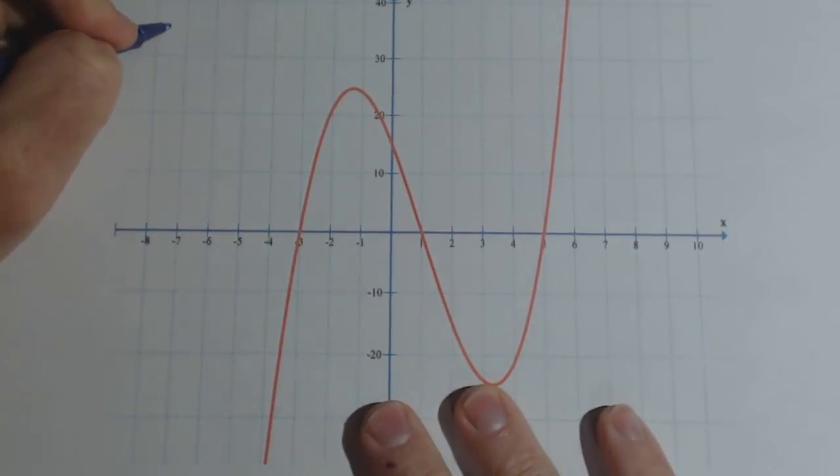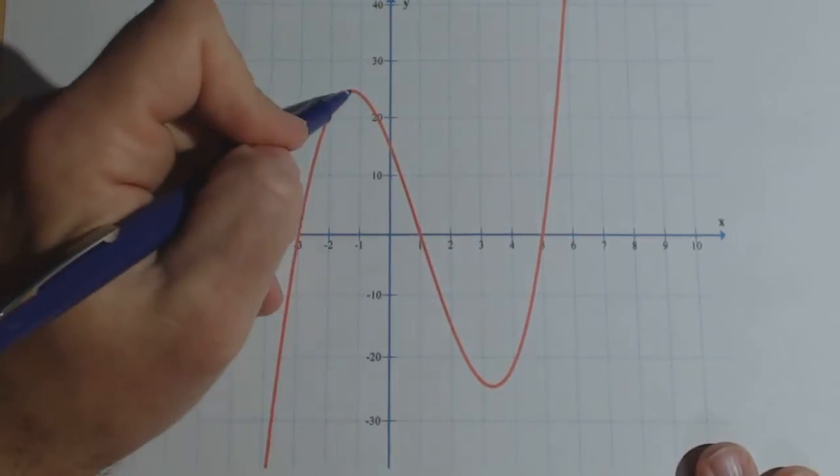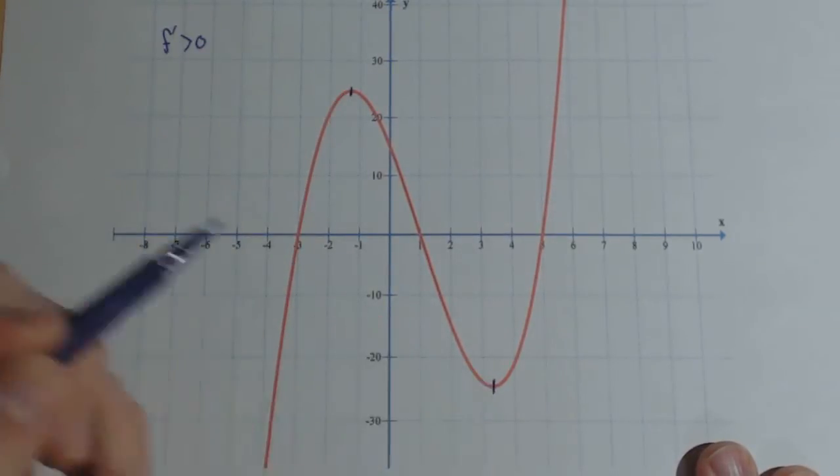So first let's talk about the first derivative, f prime, being greater than zero. Remember what that means - the function is increasing. So the function is increasing until right about here, and then it's increasing from here on.